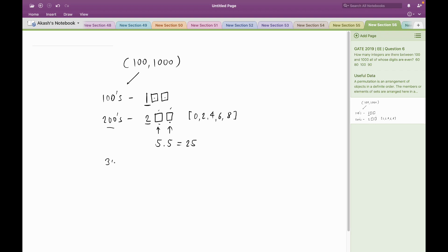Similarly, I will reject the 300 series because the first digit is odd. Looking at the pattern, I can say that for the 400 series, 600 series, and 800 series, I would have 25 different numbers each whose all digits are even.